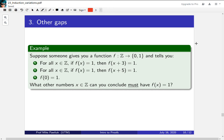Suppose that someone gives you a function f from the integers to {0, 1} and tells you that for all integers x, if f(x) is 1, then f(x+3) is also 1. They also tell you the same thing for x and x plus 5. And to get you started, they tell you that f(0) is 1. What other integers can you conclude must have f(x) equals 1?